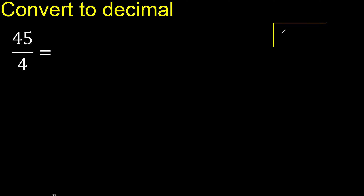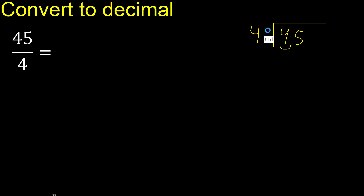45 divided by 4. 4 is not less, so 4 multiplied by which number is nearest to 4 but not greater? 4 multiplied by 2 is 8 — 8 is greater. 4 multiplied by 1 is 4, which is not greater. 4 minus 4 is 0.